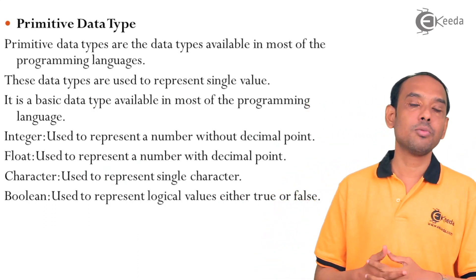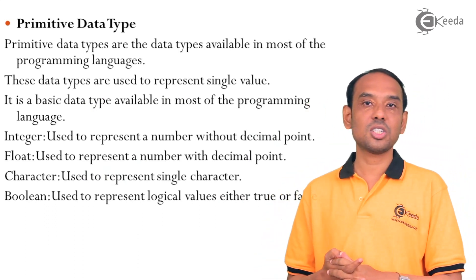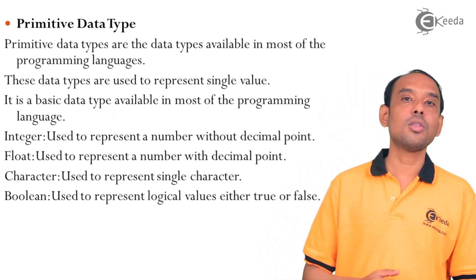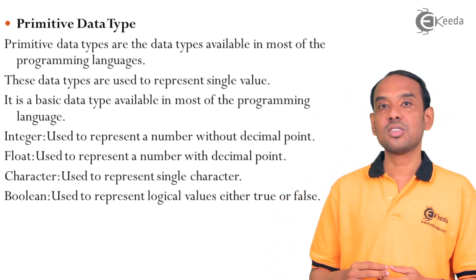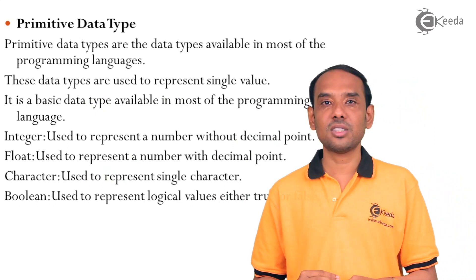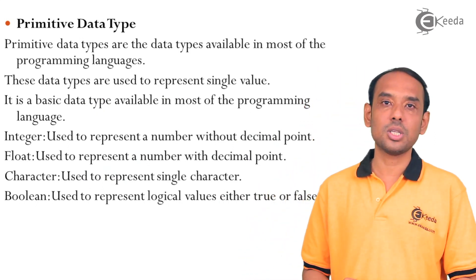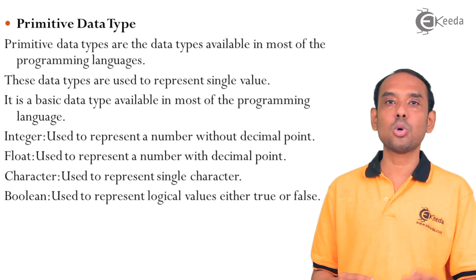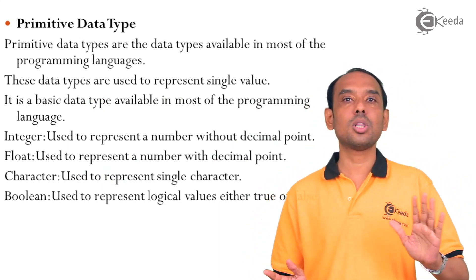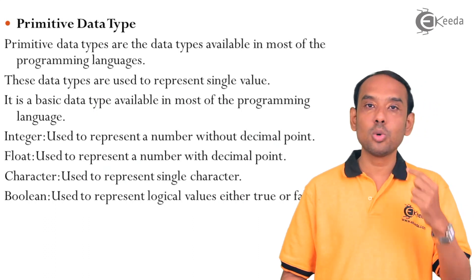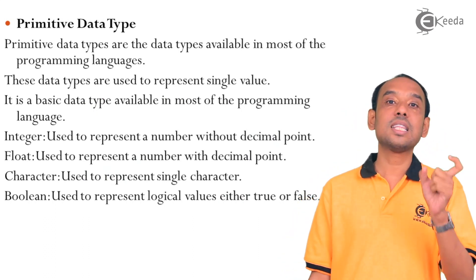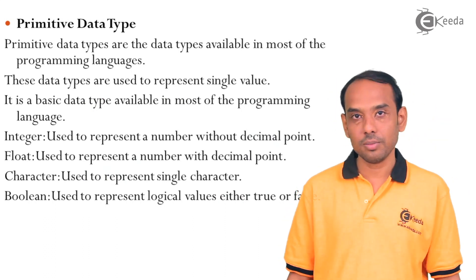The next primitive data type in the classification of data structures is pointers — one of the most important in C. Data structures can be implemented using C. Pointers are used to store the address of a variable; they do not store the value of the variable but rather the reference to it, which is basically the address of the variable.